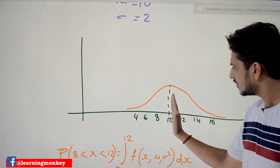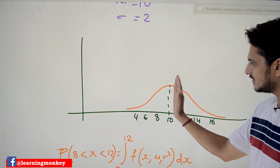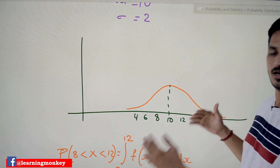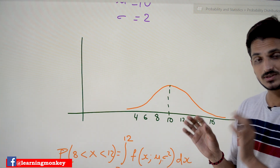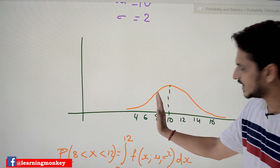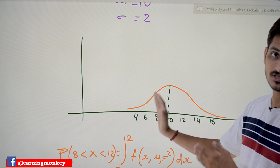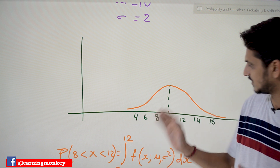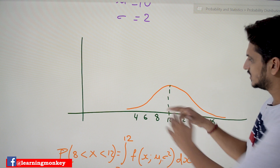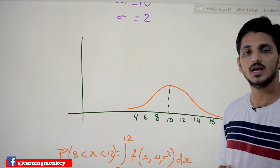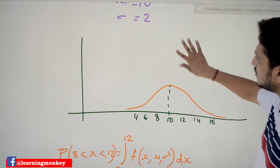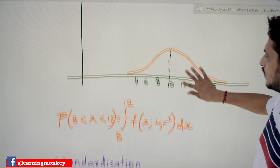At μ = 10, on the x-axis at 10 we have the maximum value, and both sides are symmetric in shape. The σ value given is σ = 2, so one standard deviation distance from the mean on the left and one standard deviation distance from the mean on the right hand side. We discussed this visualization in our previous classes many times.